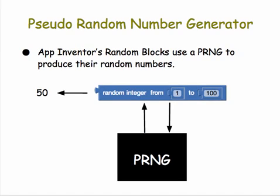In App Inventor, the random integer block that we use, as you've seen, will give us a random number in a range. So if we say from 1 to 100, it will give us a number such as 50, and it does so by calling on the built-in PRNG in App Inventor.